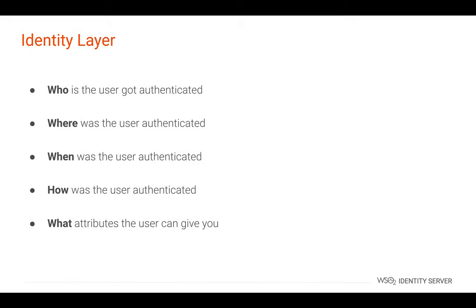The ID token, which represents the identity layer, provides user-related information such as who the user is, where and when the user was authenticated, the mode of authentication, and the attributes the user had agreed to provide.